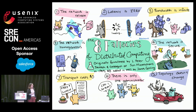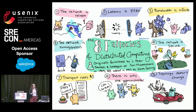In the 90s, some really smart people at Sun Microsystems came up with a list of eight common fallacies people make when reasoning about distributed computing: the network is reliable, latency is zero, bandwidth is infinite, the network is secure, topology never changes, there's only one administrator, the transport is free, and the network is homogenous.